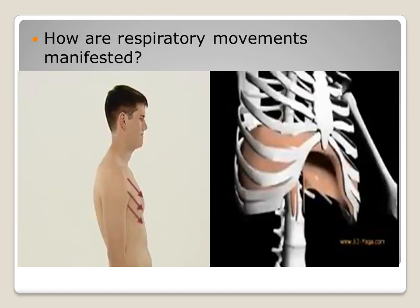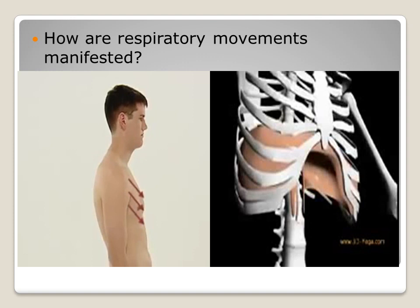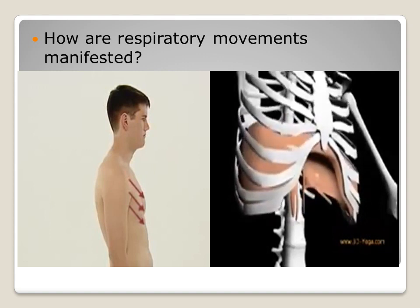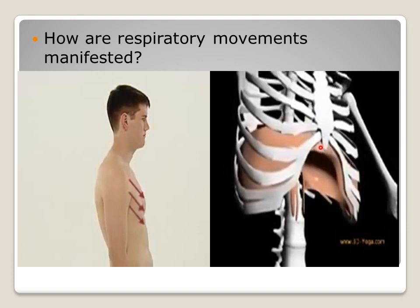These videos will show you how your chest, your thoracic cage, and your diaphragm act during inhalation and exhalation. During inhalation, your chest will move up, while during exhalation it will be lowered down. In the second video, you notice how your thoracic cage increases in volume and then decreases in volume during expiration, and how your diaphragm contracts and relaxes.